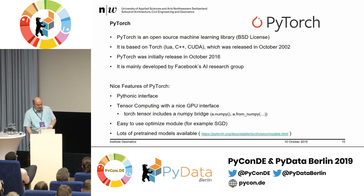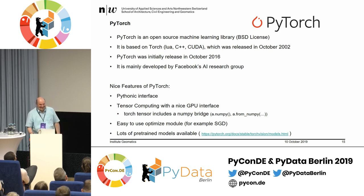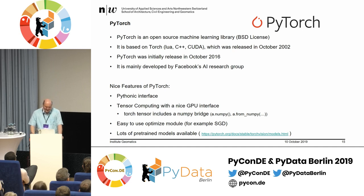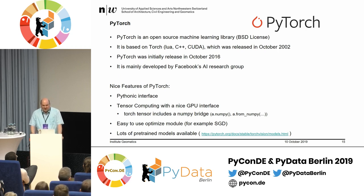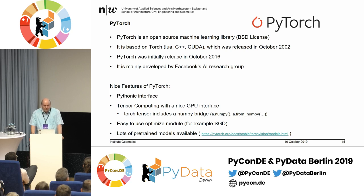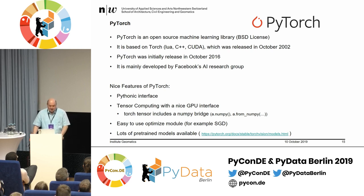Now let's look at PyTorch. This project was the first bigger project I used PyTorch — I just wanted to try it. Some sites say PyTorch is faster than other frameworks, but that's not the reason. The main reason was that tensors are more closely tied to the GPU, so the whole GPU programming is easier in PyTorch. PyTorch is BSD licensed, based on Torch — a very old framework dating back to 2002, written in Lua and C++ with CUDA for the GPU part. PyTorch was the Python version created in 2016, mainly developed by the Facebook AI research group.